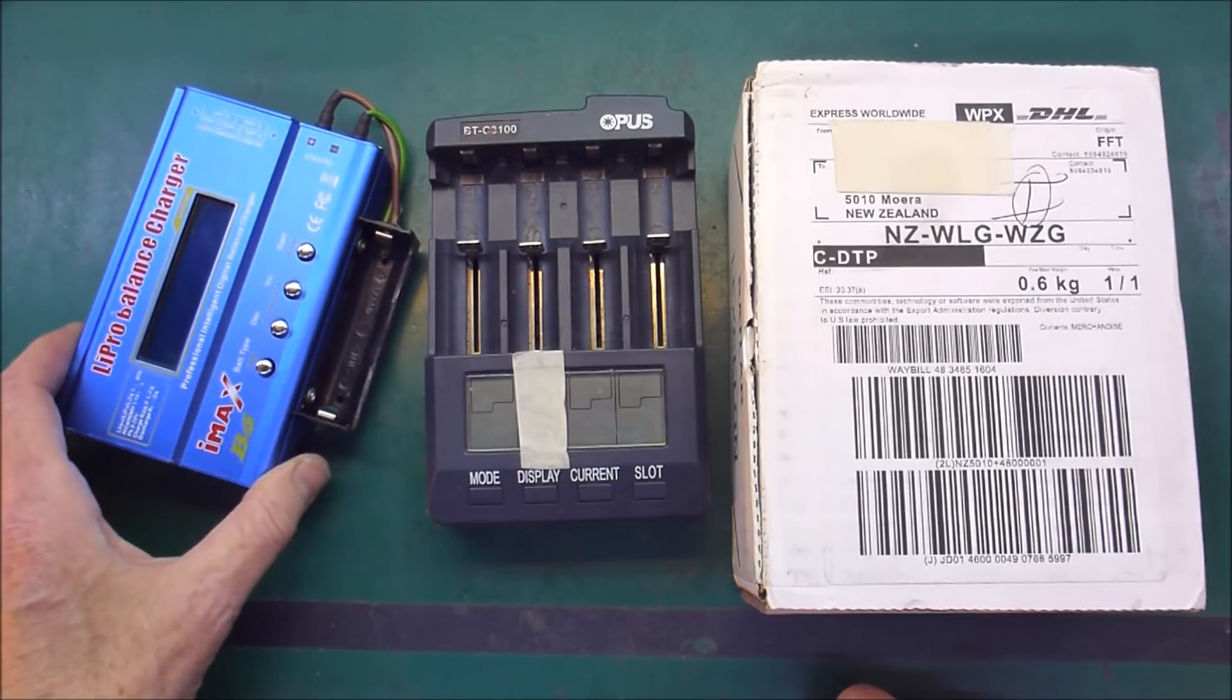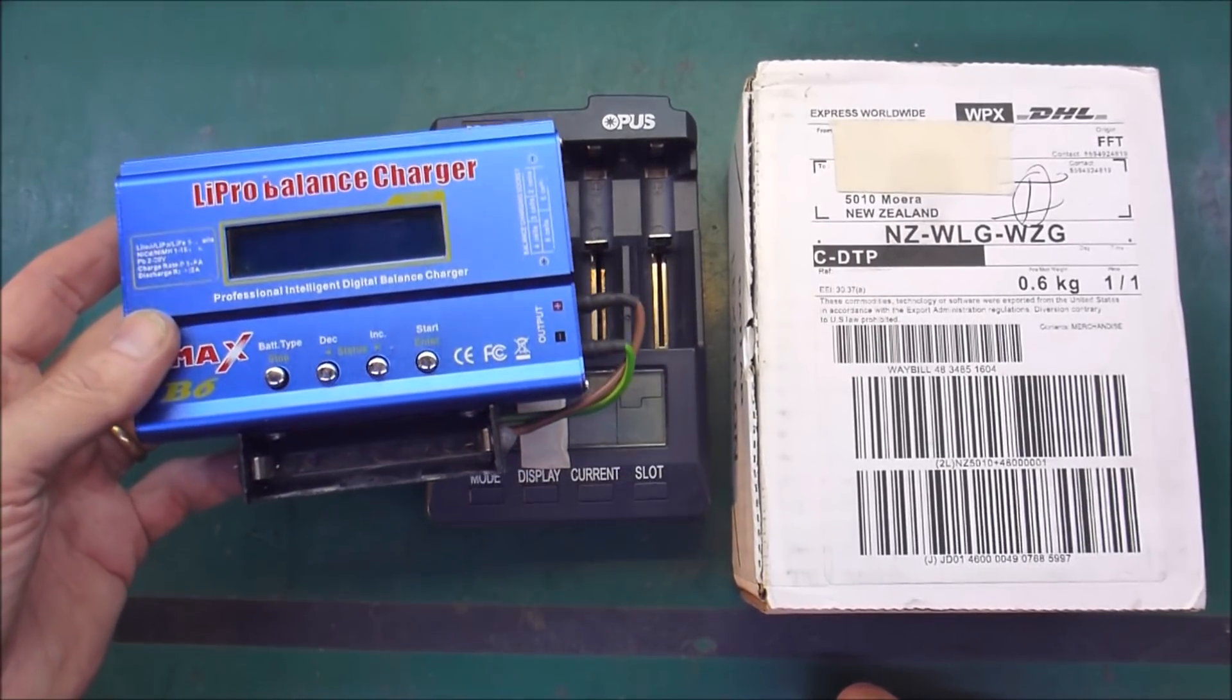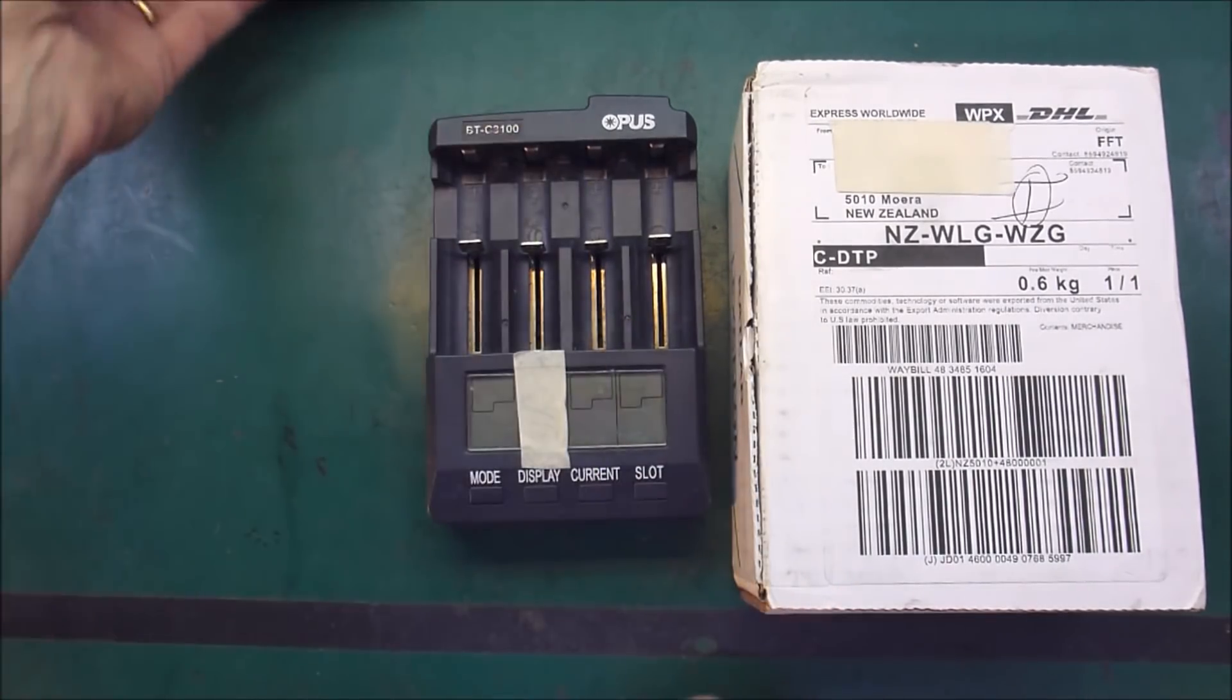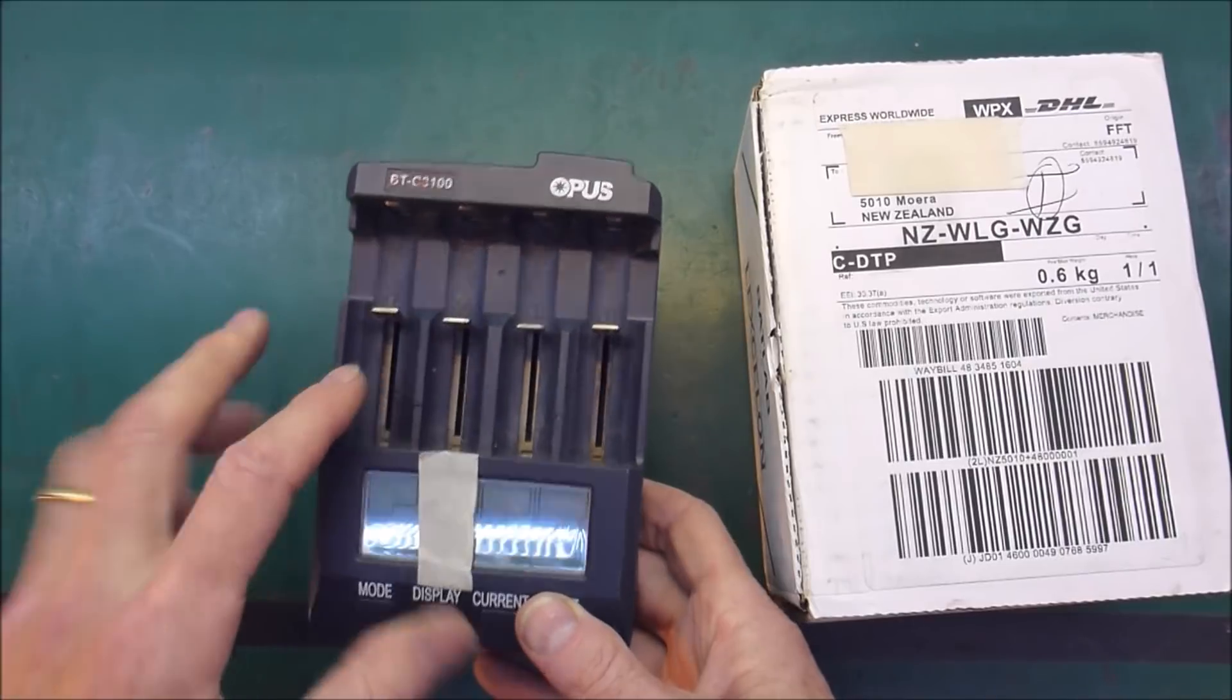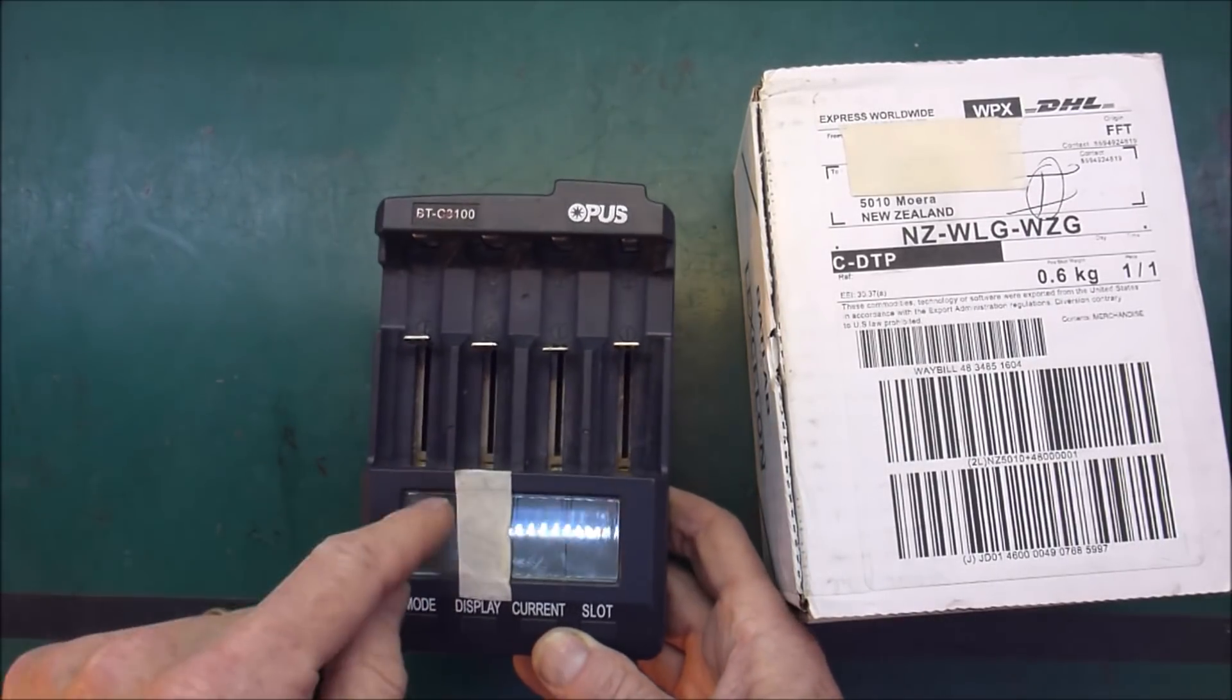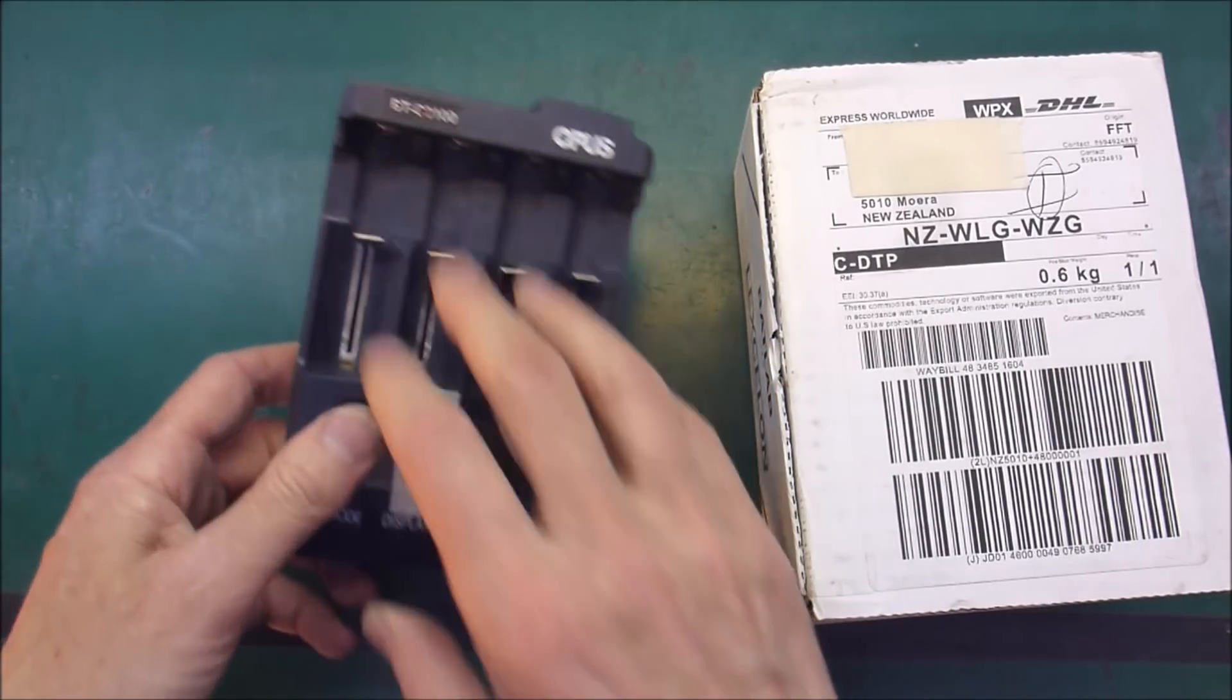So when I first started out I bought four of these and I was merely charging one cell per charger. Then I upgraded to the Opus which allows me to do four at a time, unless in my case I've blown one of the slots so I do three at a time.